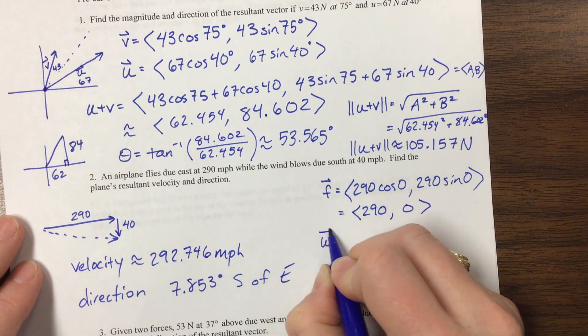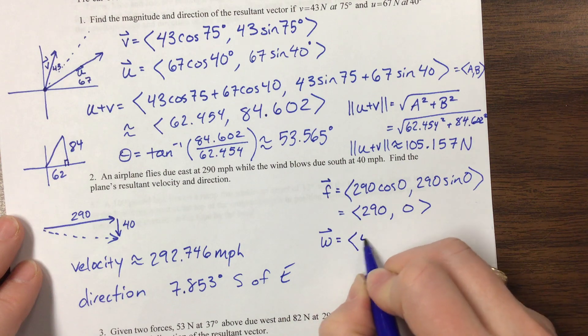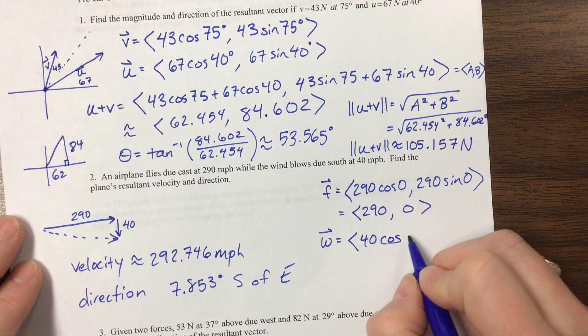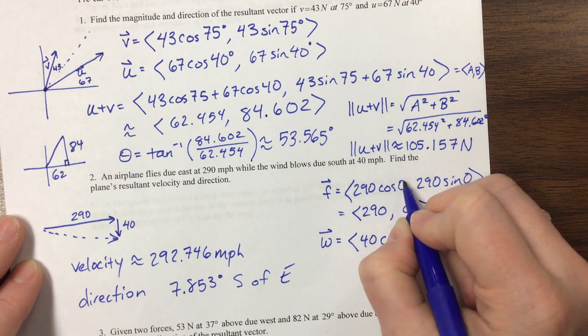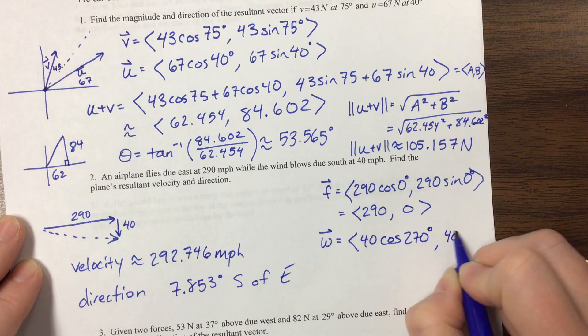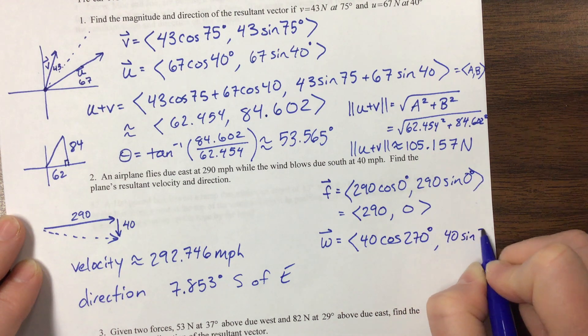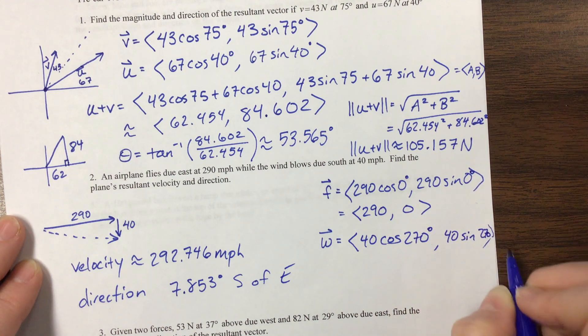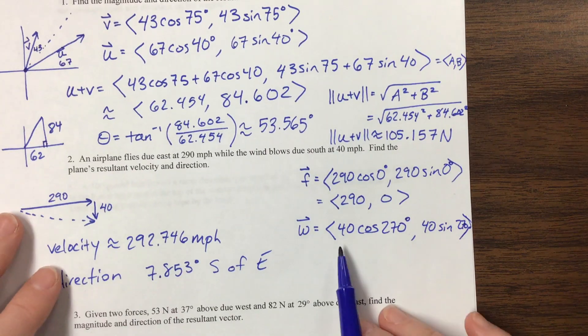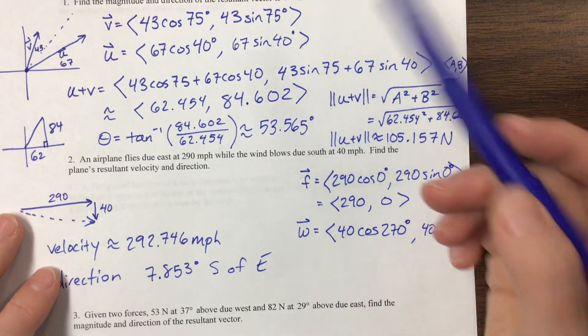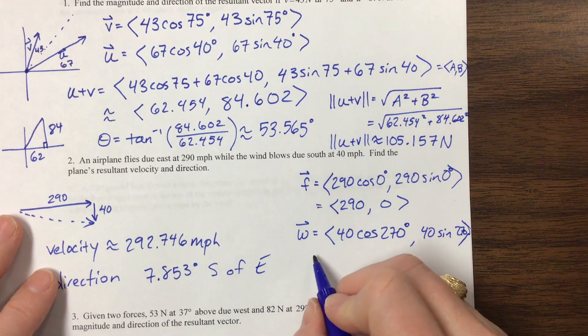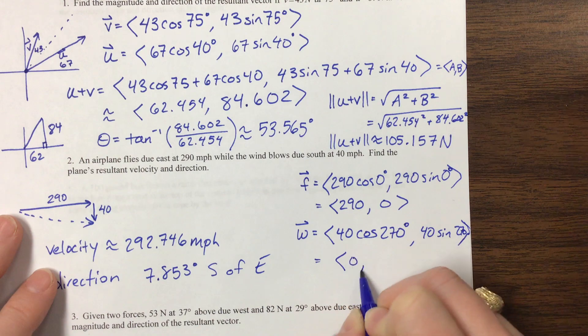And then the wind vector, this would be 40 cosine, well, what is this doing? This is going 270 degrees. And then 40 sine of 270. Cosine of 270 is 0, sine is negative 1, so this becomes the vector 0, negative 40.